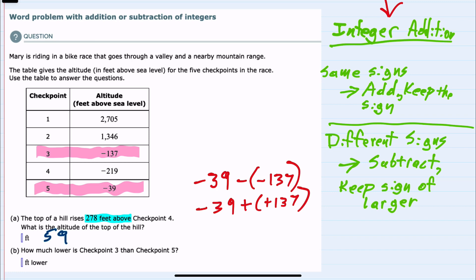Now that we have addition we can use our rules and since we have different signs we would subtract the 137 and the 39 and that would give us 98 and keep the sign of the larger, and here the positive is larger.